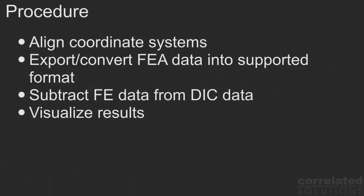The procedure for point-wise comparison of FE predictions and DIC measurements involves just a few steps. First, we obtain a common coordinate system for both measurements and FE model. Next, we convert FE output data into a format we can work with. We then resample the FE mesh results to obtain values at the measurement locations for subtraction from the DIC data. Finally, we visualize the results in our VIC-3D software, creating plots and animations.